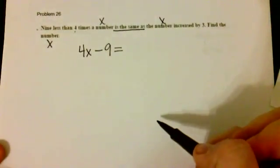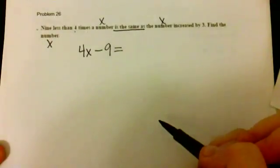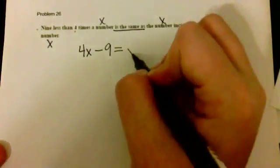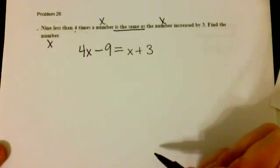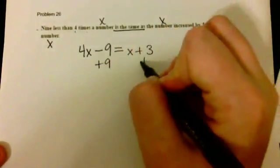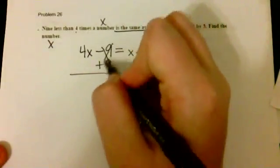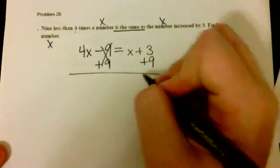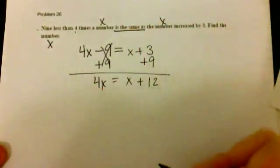It's the same as the number increased by three, and the number is X, so it's X plus 3. Now we can solve for X. We start by adding nine - we see that this cancels, and we have 12 plus X is equal to 4X.